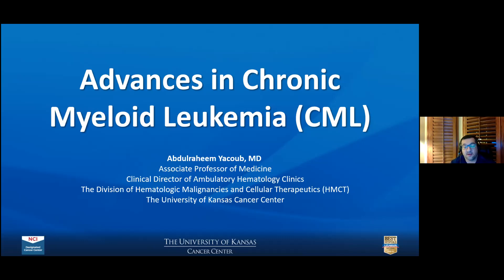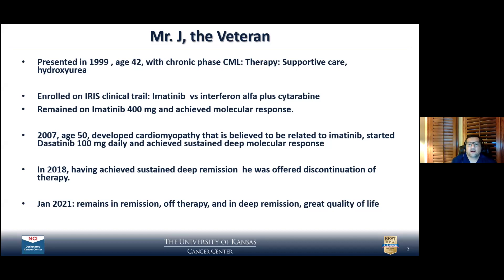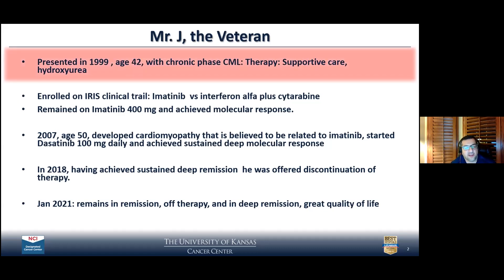Thank you, Tara, and thank you Gary and the MCA for the invitation. I can't think of a better example than CML as a model of success in our management of blood cancers over the last two decades. I can summarize the whole presentation with one slide — this is an individual patient in my clinic who tells us the whole story. The patient presented in the dark ages — that's 1999 — when we had hydroxyurea as a treatment of CML. He was 42 and just diagnosed with chronic phase CML. He was offered supportive care with hydroxyurea, and then he was brave enough to enroll in the IRIS clinical trial.